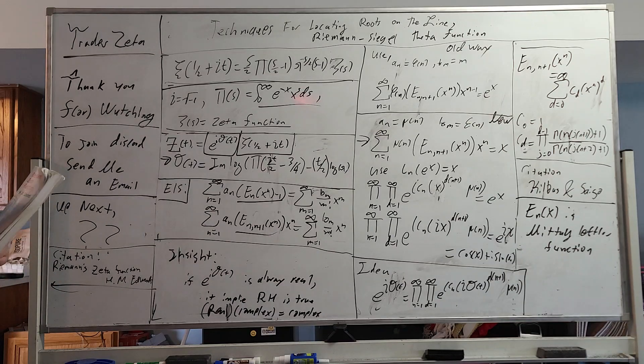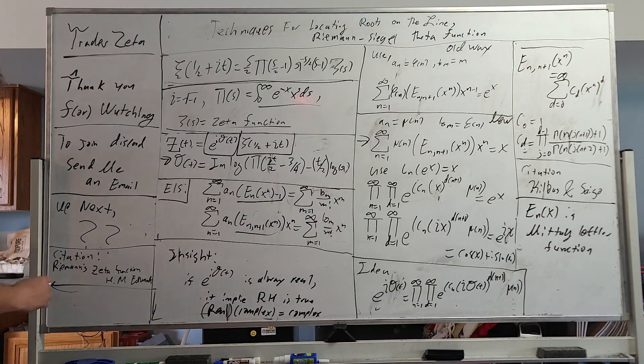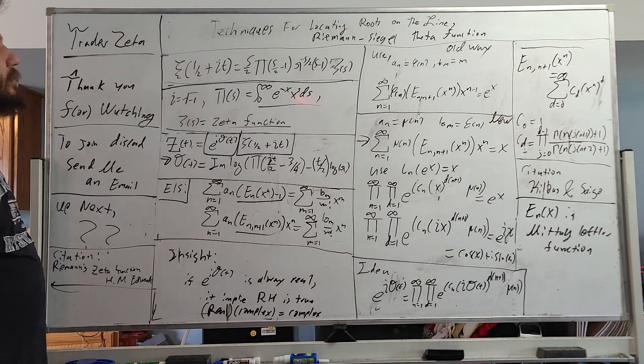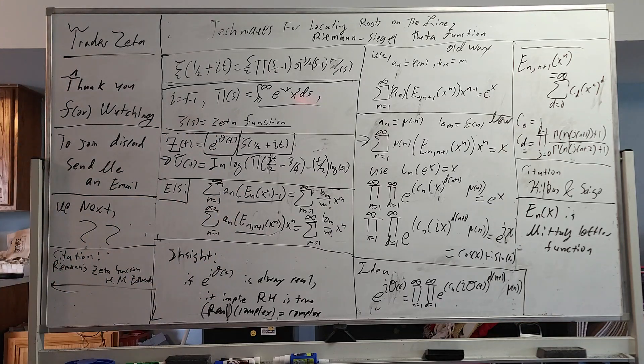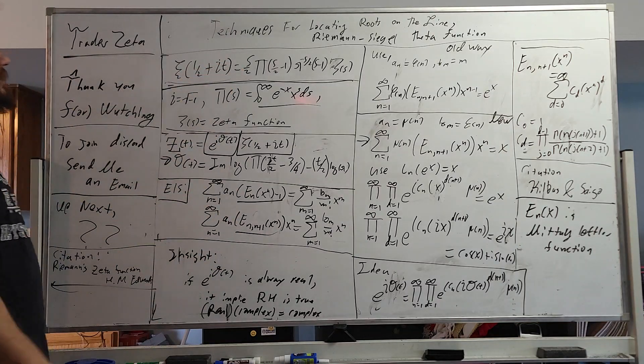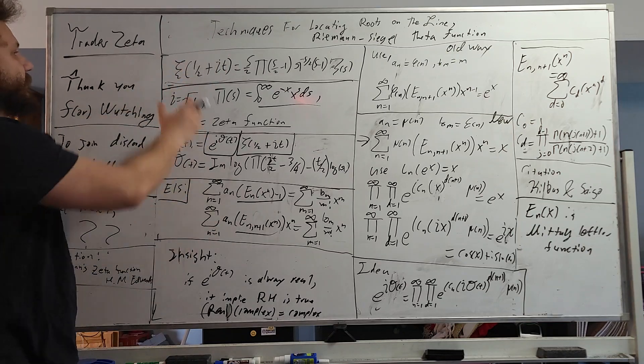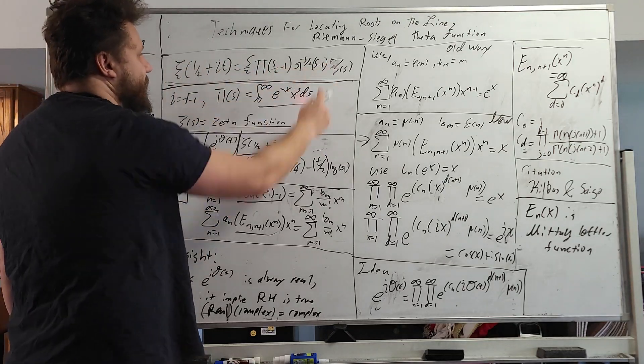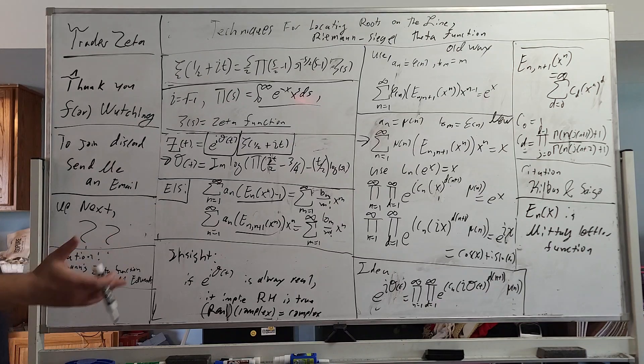The book that we are going to be referencing is Riemann Zeta Function by H.M. Edwards. The citation is right here. In the book, it talks about techniques for locating roots on the line, the Riemann-Siegel theta function, and it defines this general form. You have the functional equation of the Riemann Zeta function at one half plus it equals all this, and what we're going to do is first go over the definitions.